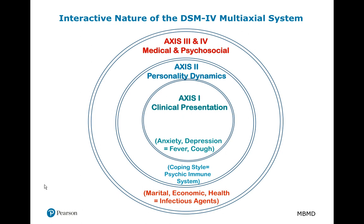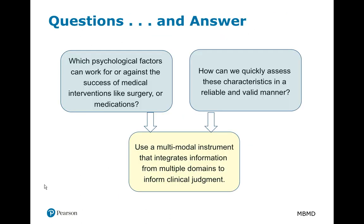Whether we conceptualize key variables along the DSM axes or within our proposed model, it still boils down to the basic questions: which psychological factors can work for or against the success of medical interventions such as surgery, chemotherapy, or medications? How can we quickly assess these characteristics in a reliable and valid manner? This begs the need for a multimodal instrument that integrates information from multiple domains and is useful for making clinical judgments.